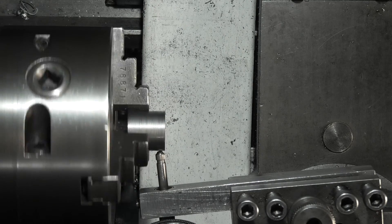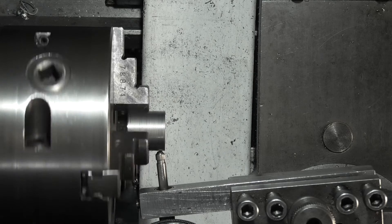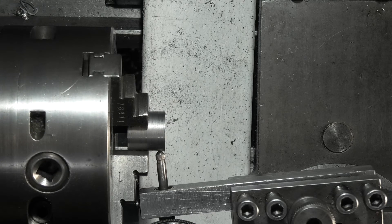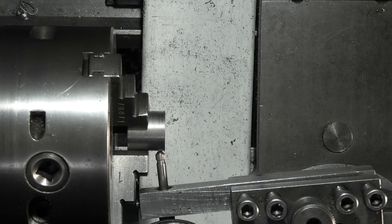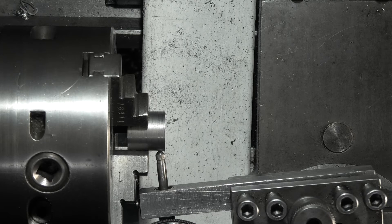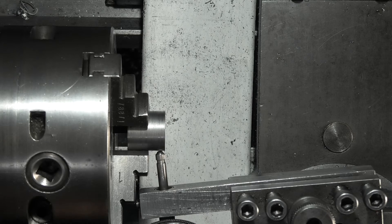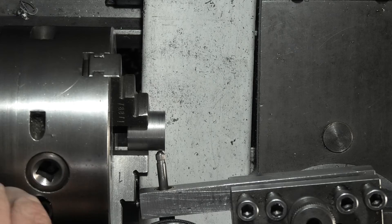I'll put the dial indicator on, and that's running out three tenths. So what I want to do is make that a six thou offset, so I'll do that just by altering my chuck to get the six thou.